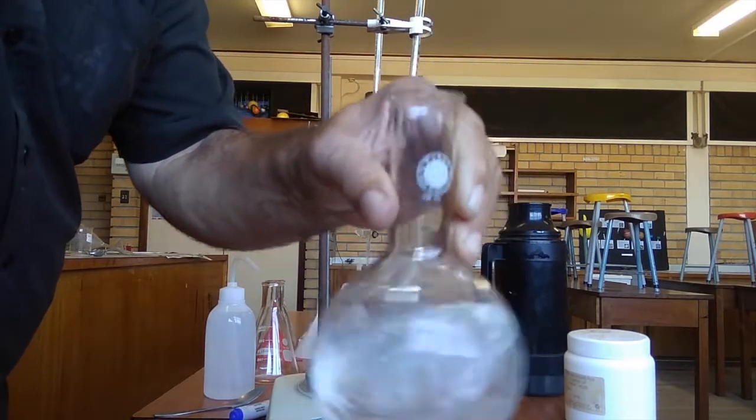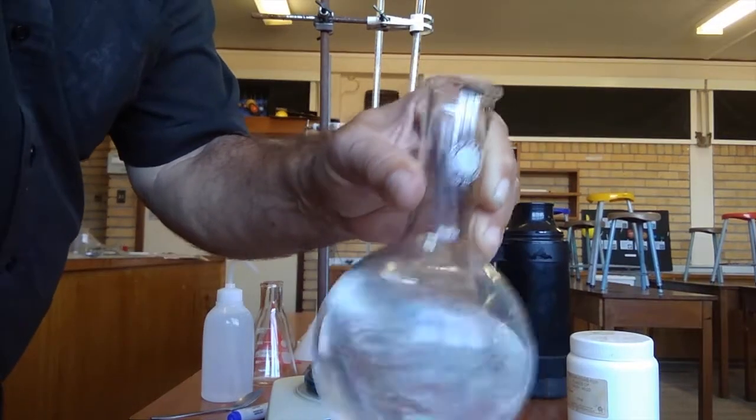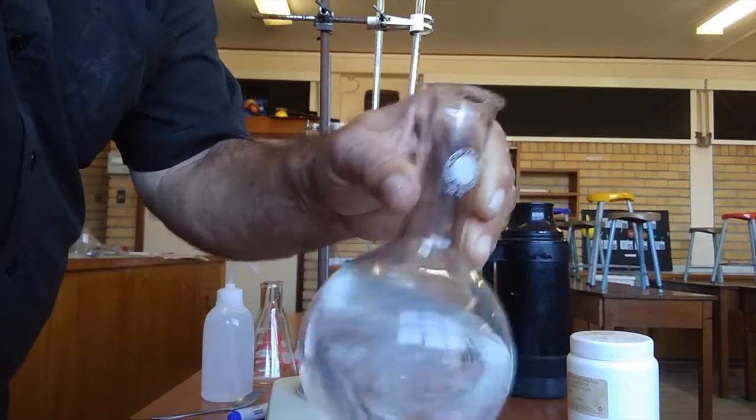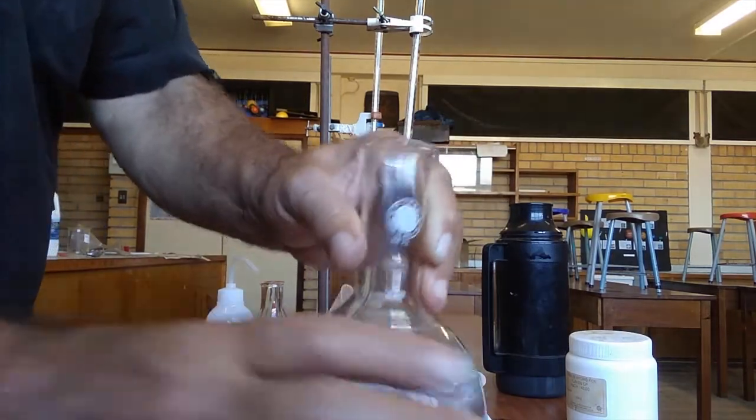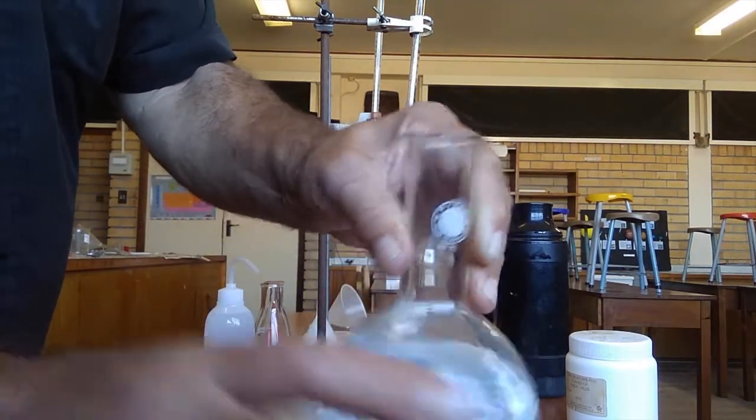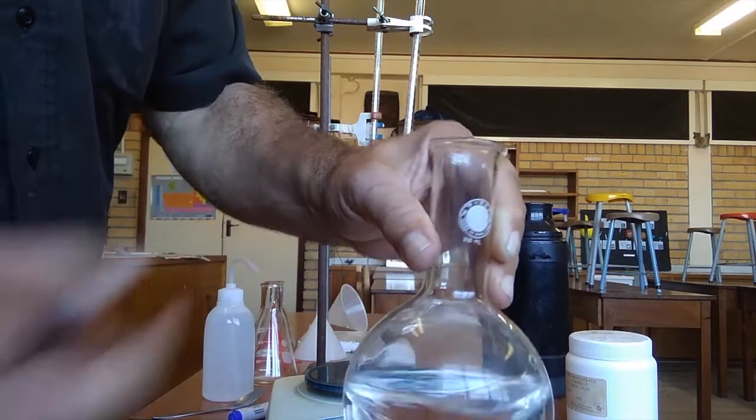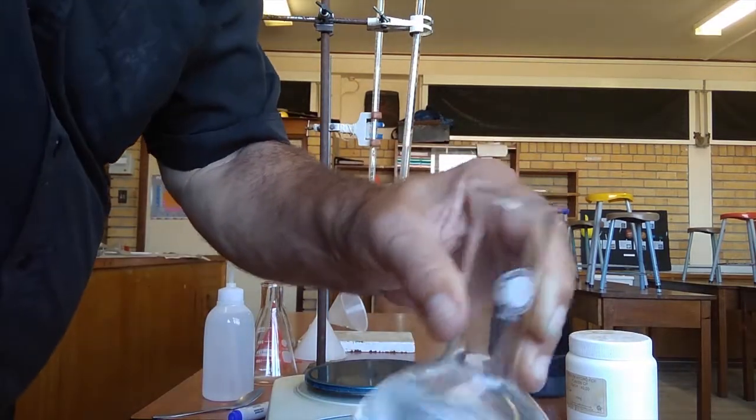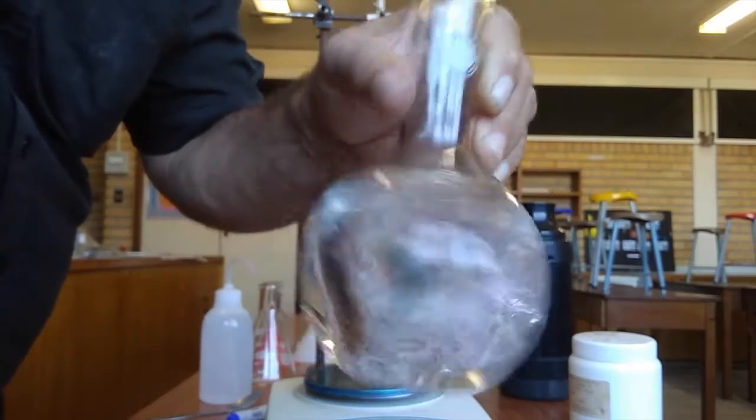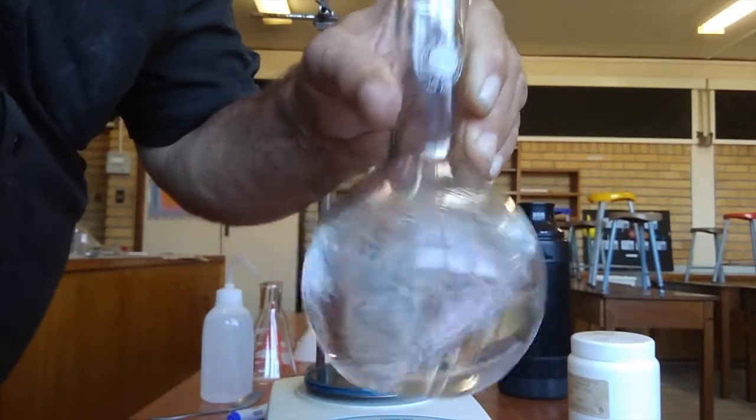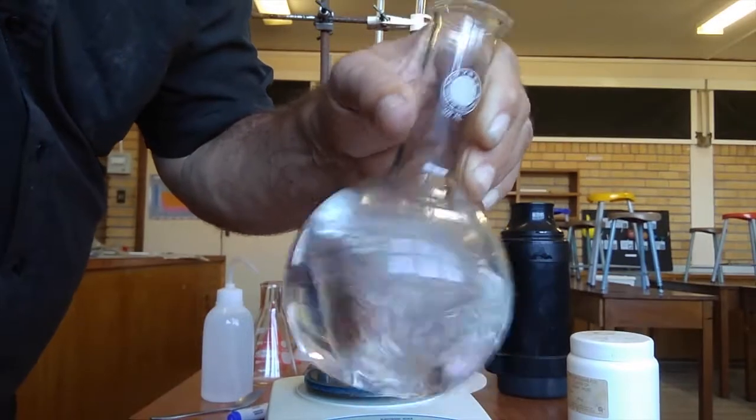The oxalic acid is the solute, the water is the solvent. We use a conical flask because when you stir it like this, the water can't be thrown out the top by centrifugal force. That looks like it's more or less dissolved.